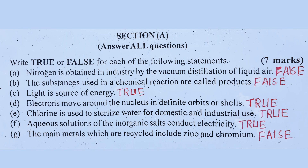Number G: The main metals which are recycled include zinc and chromium.